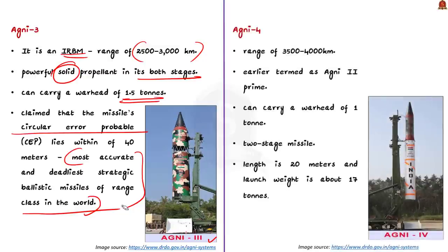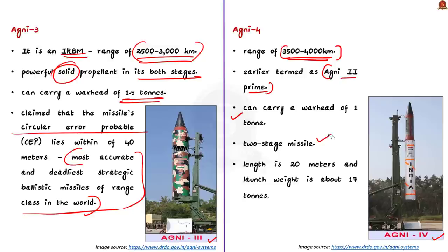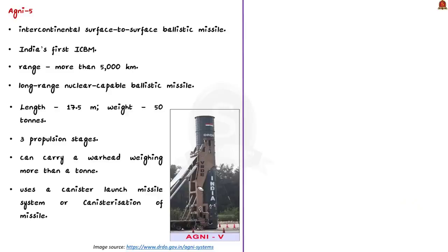Agni 4 missile has a range of 3,500 to 4,000 kilometers. It was earlier named Agni 2 Prime before being renamed Agni 4. It can carry a warhead of 1 ton and is a two-stage missile — this is an important point, as UPSC may give a statement claiming it is a three-stage missile. The length of Agni 4 is 20 meters and the launch weight is about 17 tons.